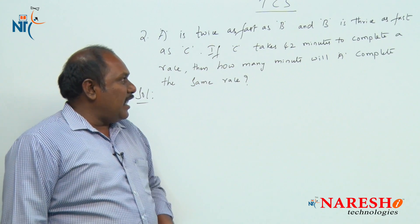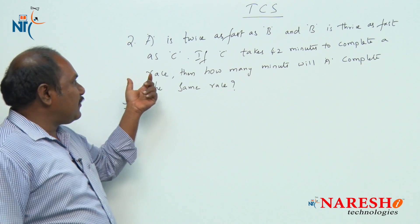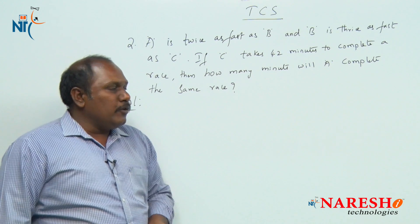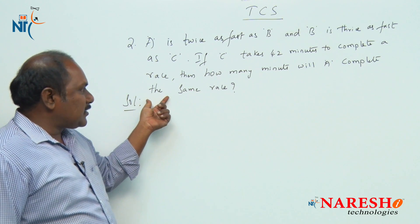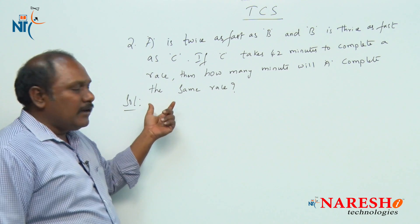A is twice as fast as B and B is thrice as fast as C. If C takes 42 minutes to complete a race, then how many minutes will A complete the same race?